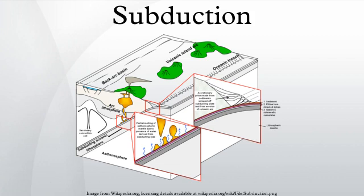That is, the subducted lithosphere is always oceanic while the overriding lithosphere may or may not be oceanic.